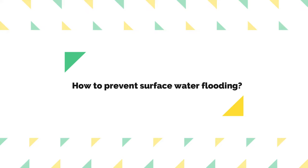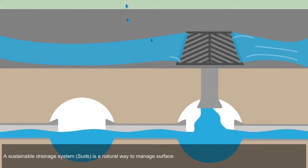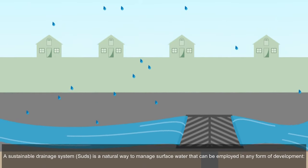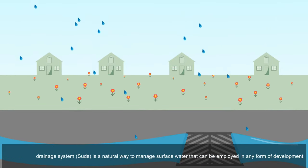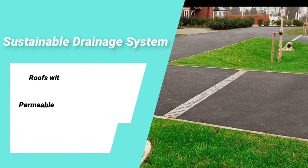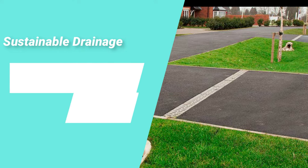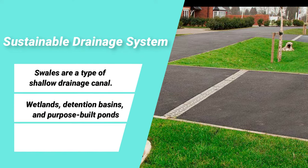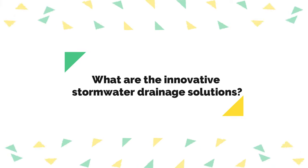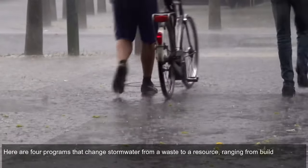Further causes of poor drainage include blockages in the pipe network due to unknown objects, and poor or infrequent maintenance of the drainage network. To prevent surface water flooding, a Sustainable Drainage System (SuDS) is a natural approach that can be employed in any development. SuDS solutions include green roofs with plants, permeable surfaces that allow water to pass through, filter drains and filter strips, and infiltration trenches.